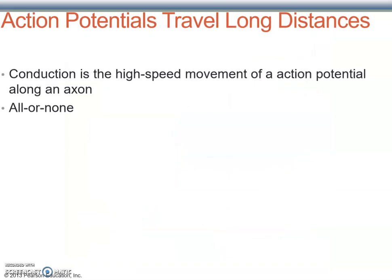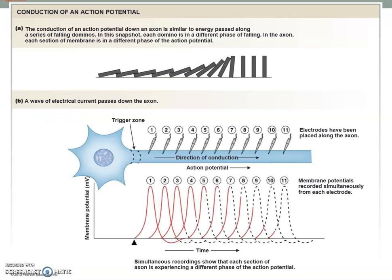In contrast to graded potentials, action potentials are all or nothing — very important. There is no such thing as a small or large action potential. You either have one or you don't. They travel long distances, they don't decay over distance, and they're always the same strength. As an action potential is generated at the trigger zone at the axon hillock, it will travel the entire length of the axon without decaying, sequentially triggering action potentials throughout its length until it arrives at the axon terminal. There is no difference between the 1st and the 200th action potential generated along that axon.